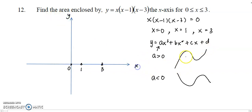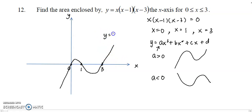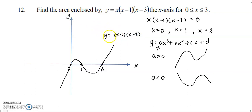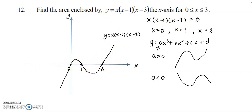Combining the three root points with the positive leading coefficient shape, the curve goes through 0, dips down, comes back up through 1, meets 3, then goes up. This is the graph of y = x(x − 1)(x − 3). The region we want is enclosed by the curve and the x-axis from 0 to 3.